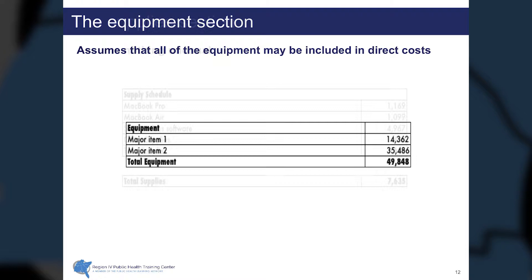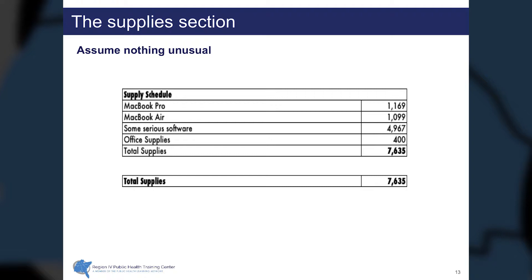The supply section provides a schedule of the supplies to be used in the project. There are two computers and some software included. Remember that computers are normally thought of as equipment, but since the value of these computers is less than $5,000, they are treated as a supply — similarly, the software included is just under $5,000. We've also added some office supplies such as paper, binders, etc. for $400, giving total supplies of $7,635.